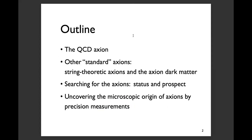This is the plan of the talk. I'll first introduce the QCD axion, the most important axion that has compelling theoretical reason. I will also introduce other standard axions — the axions from string theory and axion dark matter — and discuss the experimental search for those axions: the current status and future prospects. Finally, I will discuss the possibility of uncovering the microscopic origin of axions by low-energy precision measurements.